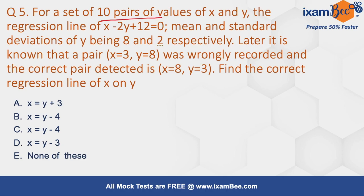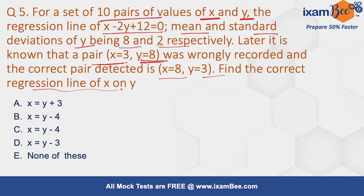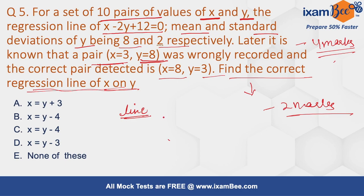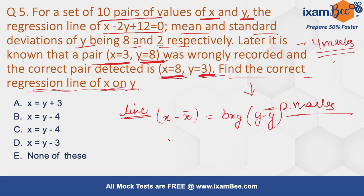Let's see the last question for this part. For a set of 10 pairs of values of x and y, a regression line is given along with the mean and standard deviation of y. It was later found that the pair — that is, the values x and y — were interchanged while recording. We now have to find the correct regression line. This question is important for four marks.